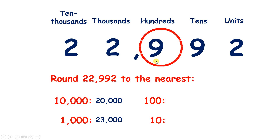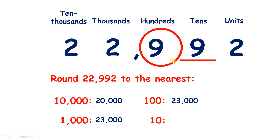Now rounding to the nearest 100, we find our place, look next door — it's 4 or less, so that 9 will stay the same, and that rounds to 22,900.